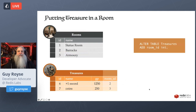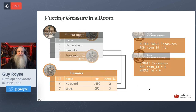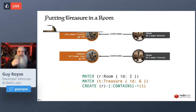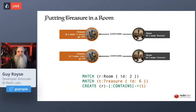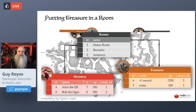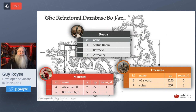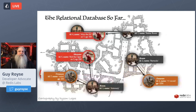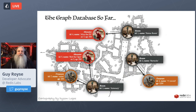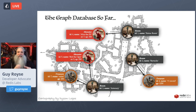Putting a treasure in the room follows the same pattern — in SQL add the foreign key, and in Cypher we match the room, match the treasure, and create a relationship. Our relational database now has three tables with one-to-many relationships between them; our graph database now has rooms and the things in them as isolated subgraphs.